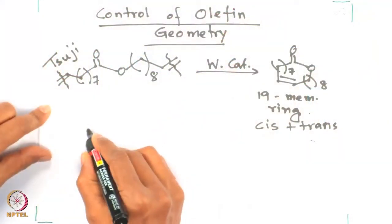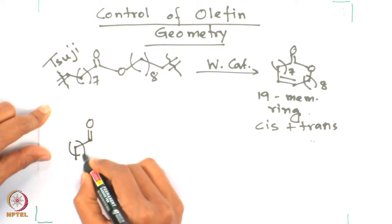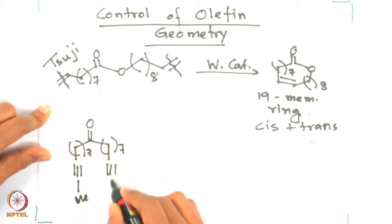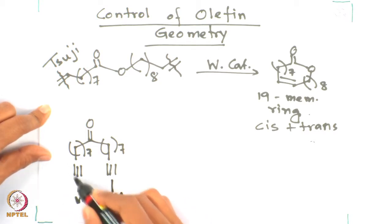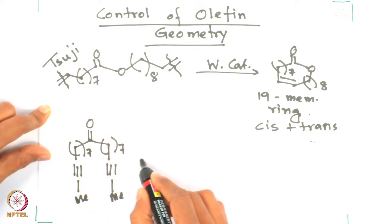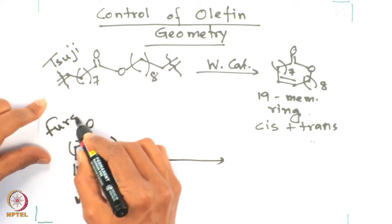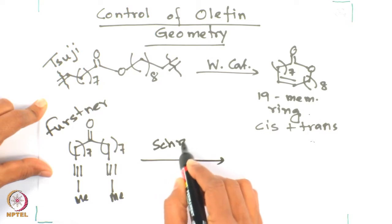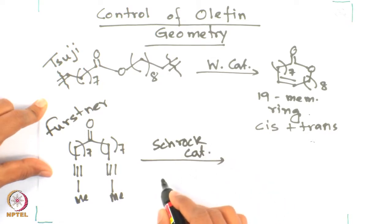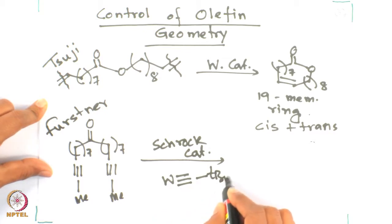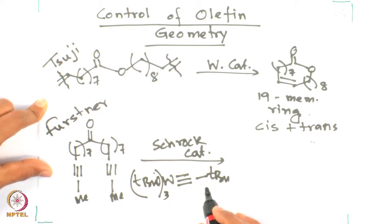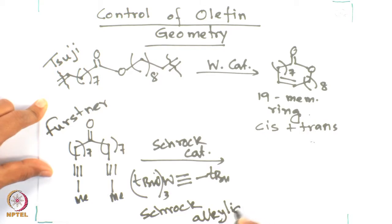The example we will discuss first is by Alloy-Fuschner. This is a terminal alkyne — not in the truest sense, as there is an alkyl group on both sides of the alkyne. Fuschner synthesized this compound and used the Schrock catalyst, a carbyne tungsten catalyst with tert-butoxide. This tungsten reagent is called the Schrock alkylidyne.